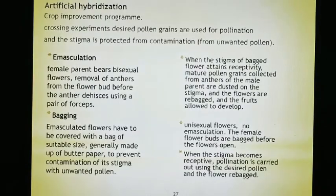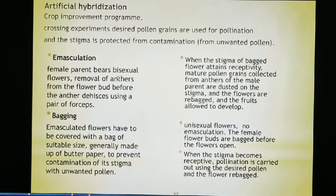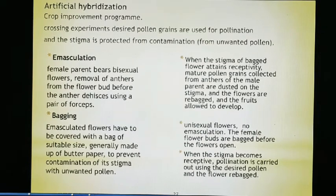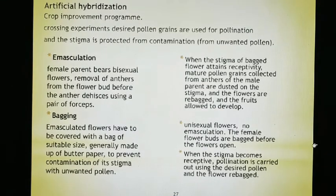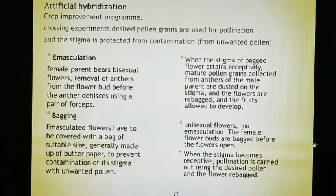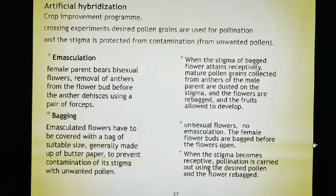Here we have points on artificial hybridization and how to carry out a crop improvement program. What is the interest of breeders? They cross two different relevant species to combine desirable characters and produce commercially superior varieties. So we combine them so that we can get better quality or superior quality production.